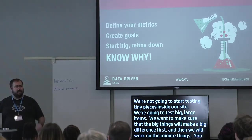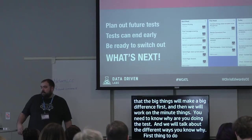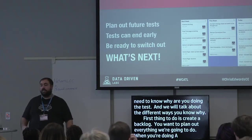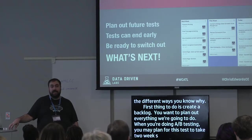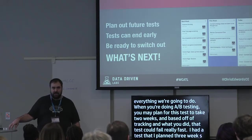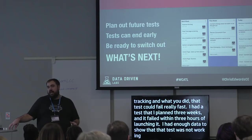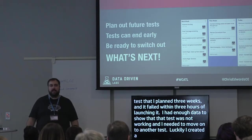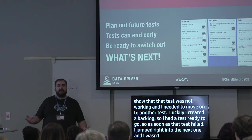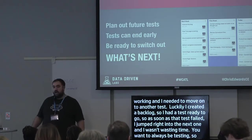You also need to know why you're doing each test. Create a backlog — plan out everything you're going to do. With A/B testing, depending on your traffic, a test you plan for two weeks could fail within three hours of launching. I had a test planned for three weeks that failed in three hours. Luckily I had a backlog ready, so I instantly jumped to the next test. Always have things lined up so you can switch out right away.